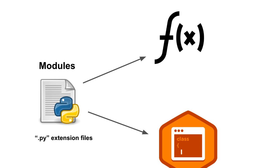Modules are simply files with a .py extension and they contain Python code — basically Python functions, classes, and variables. Functions are a bundle or set of instructions that you want to use repeatedly. Classes are a user-defined blueprint or prototype from which objects are created, providing an easy way of keeping data members and methods together in one place.